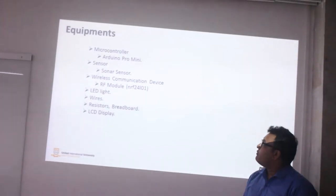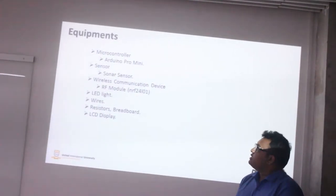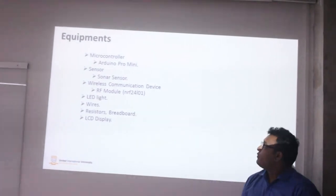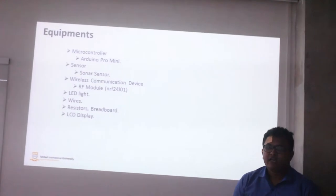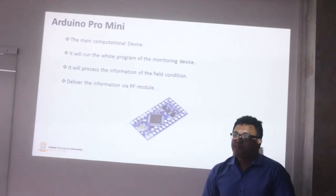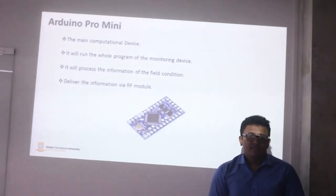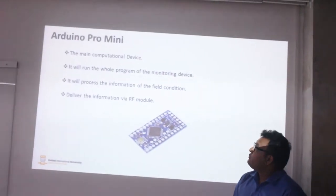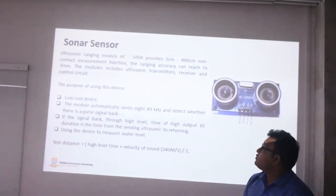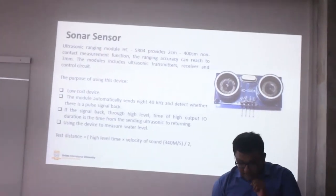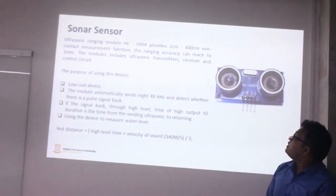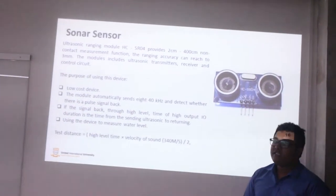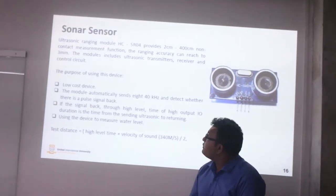Assalamu alaikum everyone. I am Asipul Adham. Now I am going to talk about the equipment we are using in our project. The first equipment is the Arduino Pro Mini as the main microcontroller. The sensor we are using is the ultrasonic sensor, and the wireless communication device is the RF module NRF24L01. We are using Arduino Pro Mini because it is a low cost device running at 3.3V with less power consumption. We are using the HCSR04 ultrasonic sensor which can measure 2 cm to 400 cm with an accuracy level of 3 mm, also running at 3.3V with low power consumption.